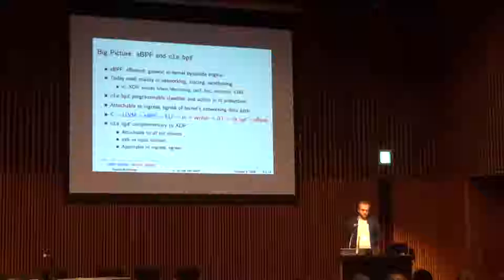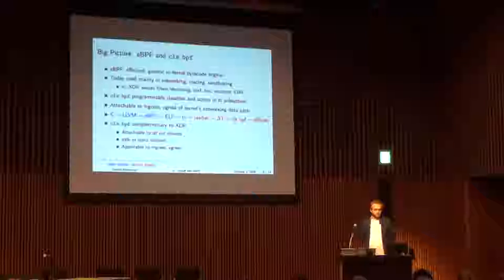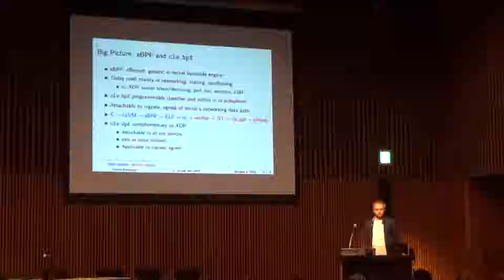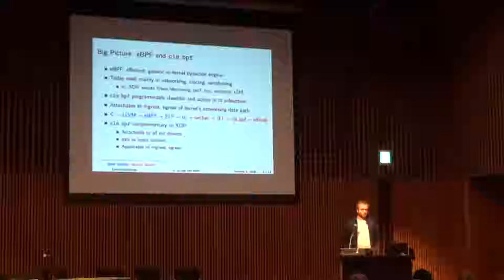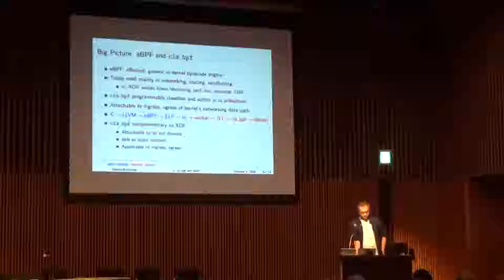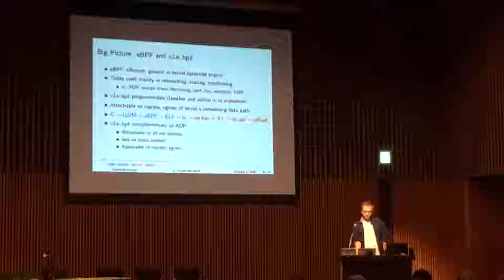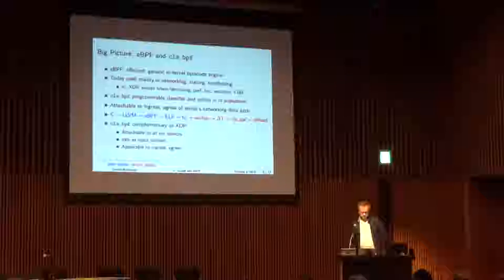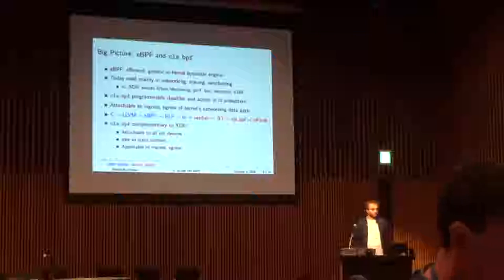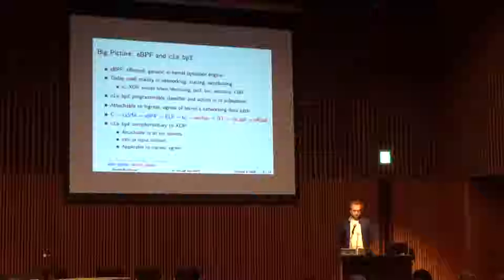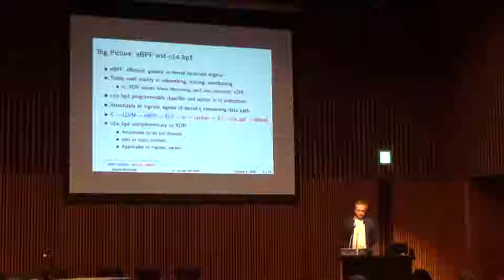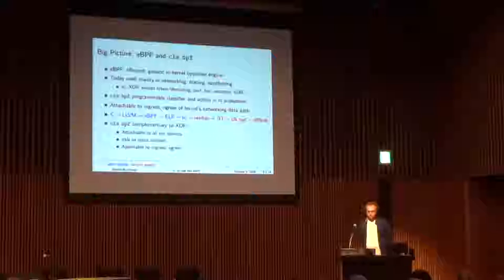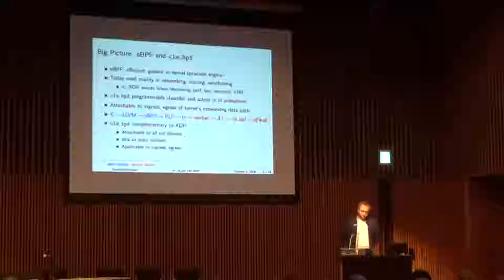For the TC subsystem, we are looking at CLS BPF, which is in some sense a classifier but not only that — it can also do actions. It can be attached to ingress and egress of the kernel networking data path. A typical workflow is: you have a restricted C program, compile it with LLVM which has an eBPF backend, it generates an object file that TC can parse and load into the kernel. A verifier makes sure the program doesn't crash the kernel, then it goes into a just-in-time compiler, and if an offload is available it can also offload to hardware.